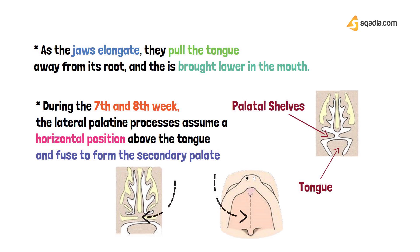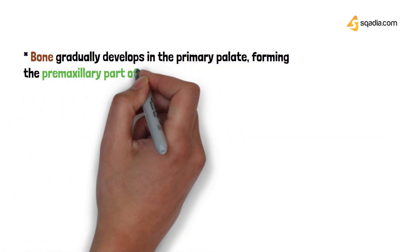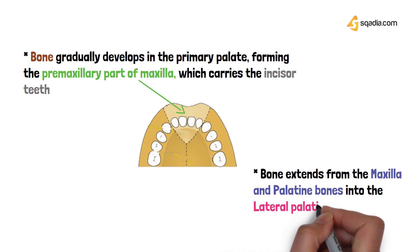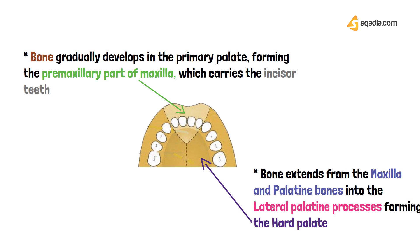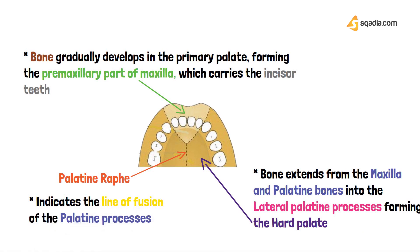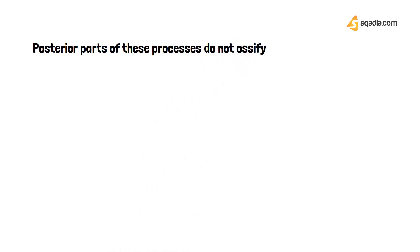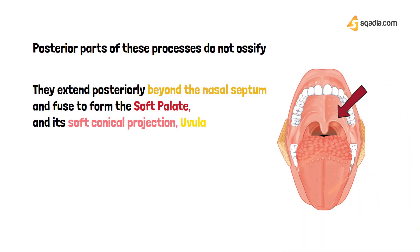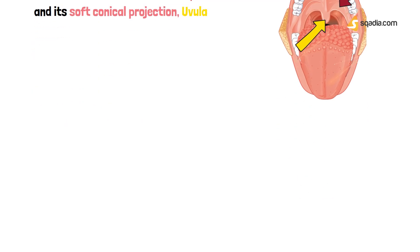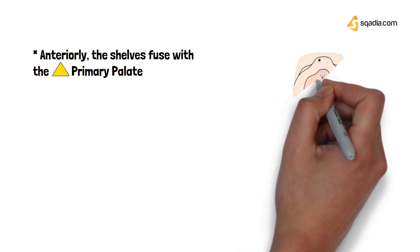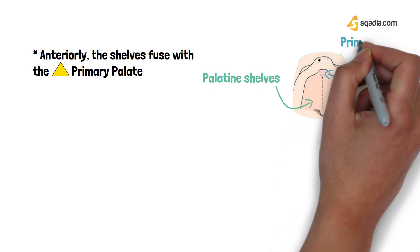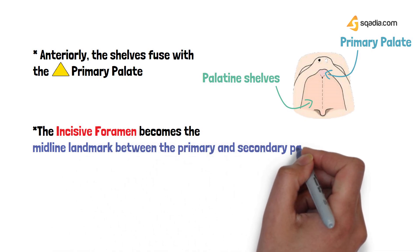Bone gradually develops in the primary palate forming the pre-maxillary part of the maxilla, which carries the incisor teeth. This bone formation extends from the maxilla and palatine bones into the lateral palatine processes, forming the hard palate. The palatine raphe indicates the line of fusion of the palatine processes. The posterior part does not ossify; it extends beyond the nasal septum to fuse and form the soft palate and the uvula. Anteriorly, the shelves fuse with the triangular primary palate. The incisive foramen becomes the landmark between the primary and secondary palate.